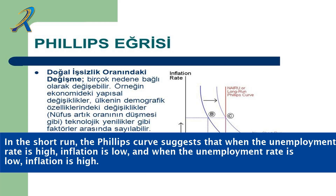In the short run, the Phillips curve suggests that when the unemployment rate is high, inflation is low, and when the unemployment rate is low, inflation is high.